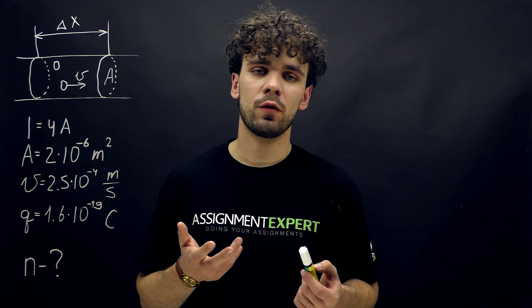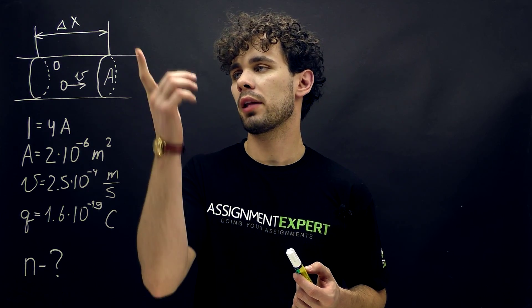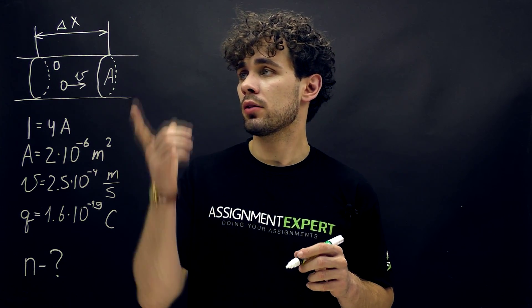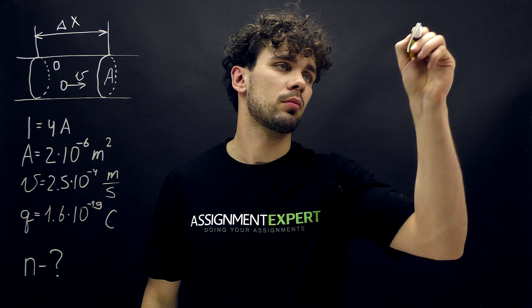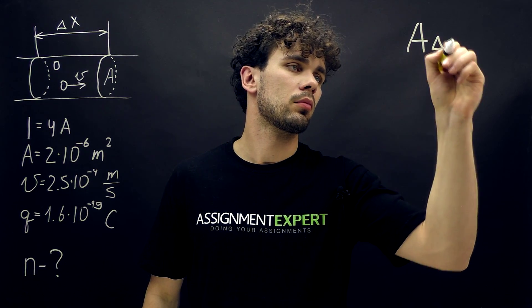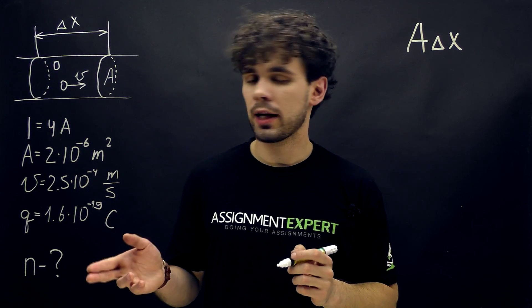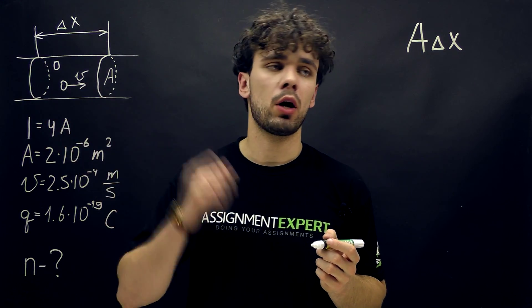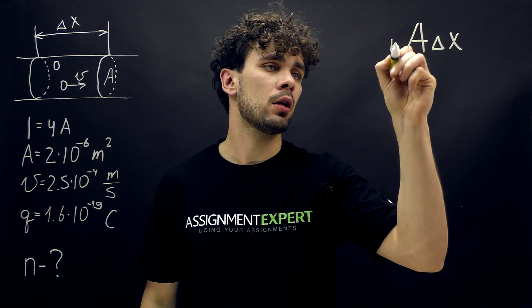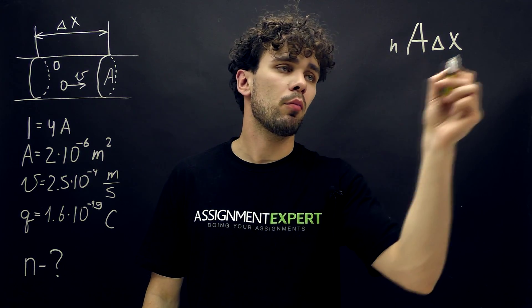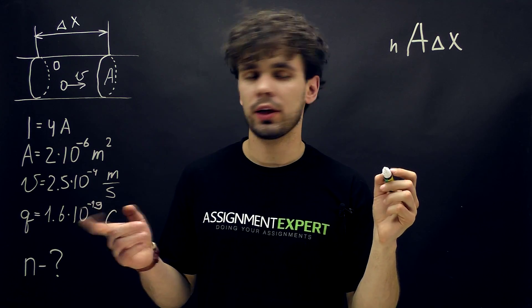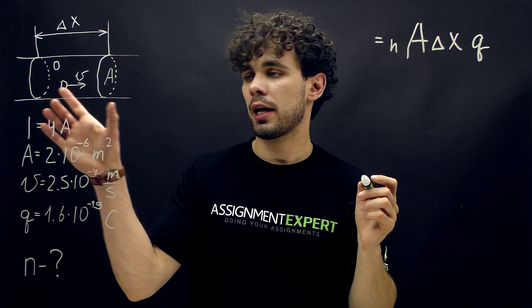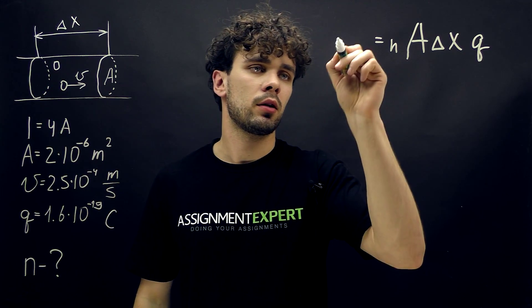First of all, let's consider the part of this wire with the length ΔX. The volume of this part will be A times ΔX. Now, if the number of electrons in unit volume is N, then the number of electrons in this part of the wire will be N times A times ΔX. And if we multiply this by the charge of one electron Q, we will get the sum of all the charges of the electrons in this part of the wire, ΔQ.